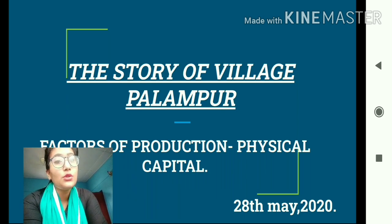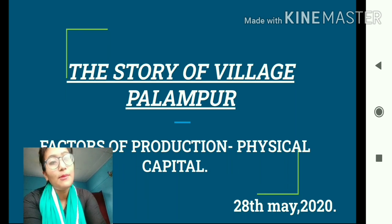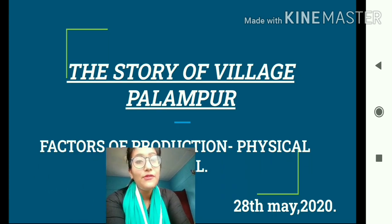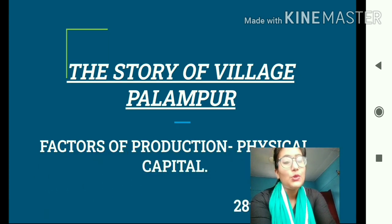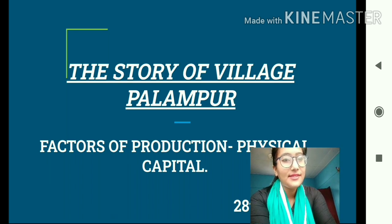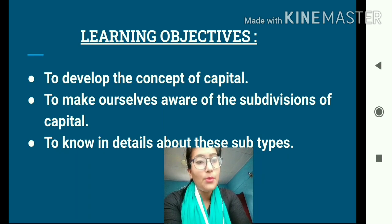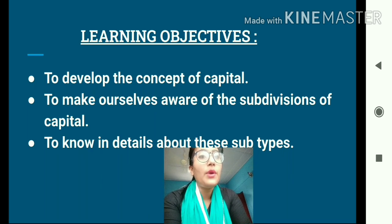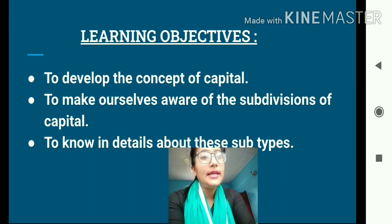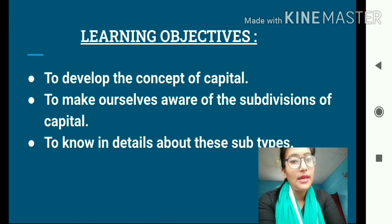Today we are going to discuss the third important factor of production — physical capital. The learning objectives for today's class are: number one, to develop the concept of capital; number two, to understand the subdivisions of capital; and number three, to know in detail about these subtypes.